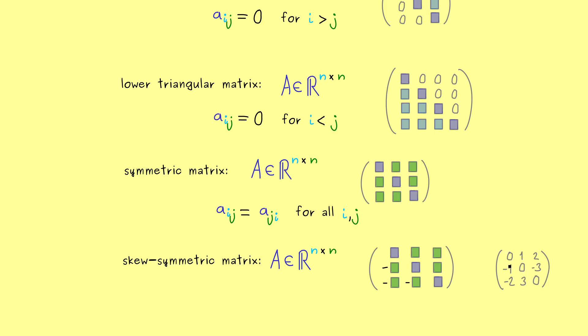Simply because 0 is the only number that is positive and negative at the same time. Or more precisely minus 1 times 0 is 0 again.